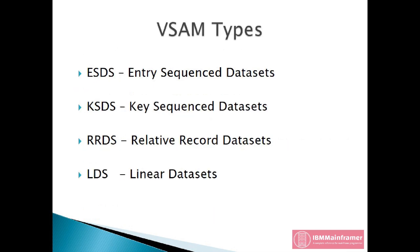VSAM has four types of datasets based around four different ways that applications generally like to consume record data. They are: ESDS, Entry Sequence Datasets; KSDS, Key Sequence Datasets; RRDS, Relative Record Datasets; and LDS, Linear Datasets.